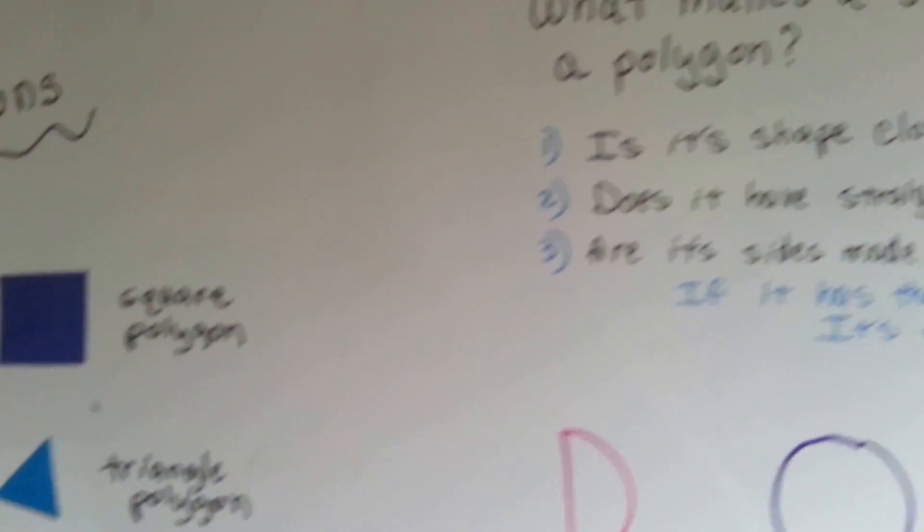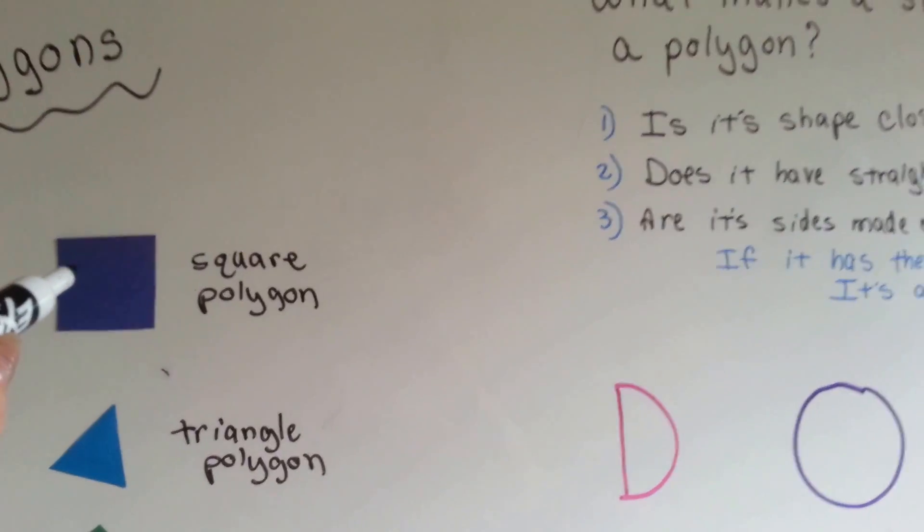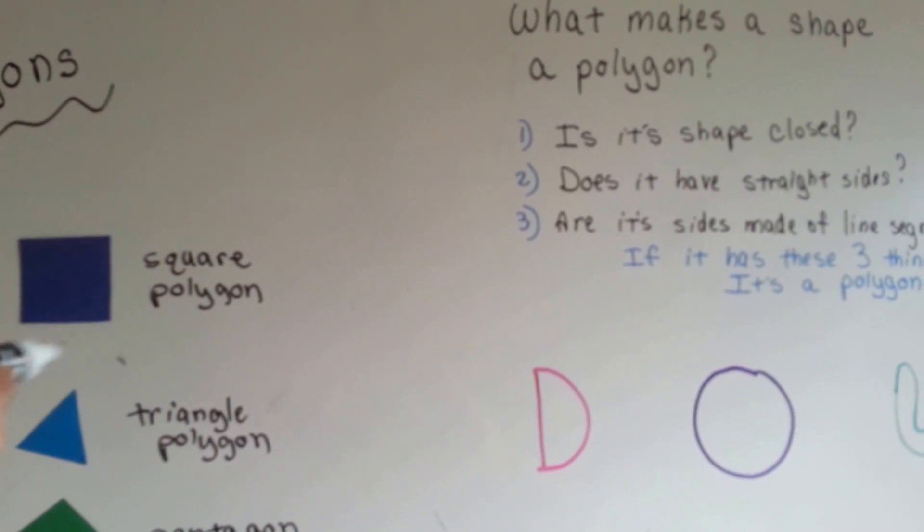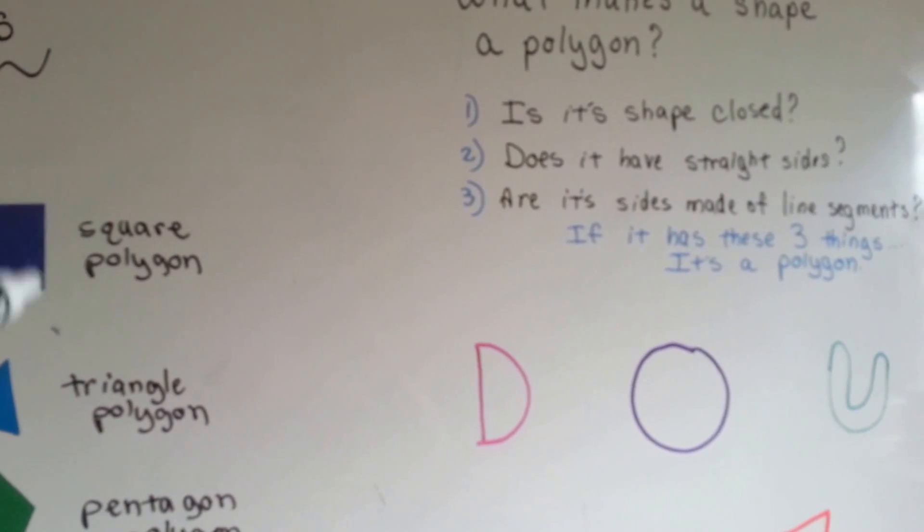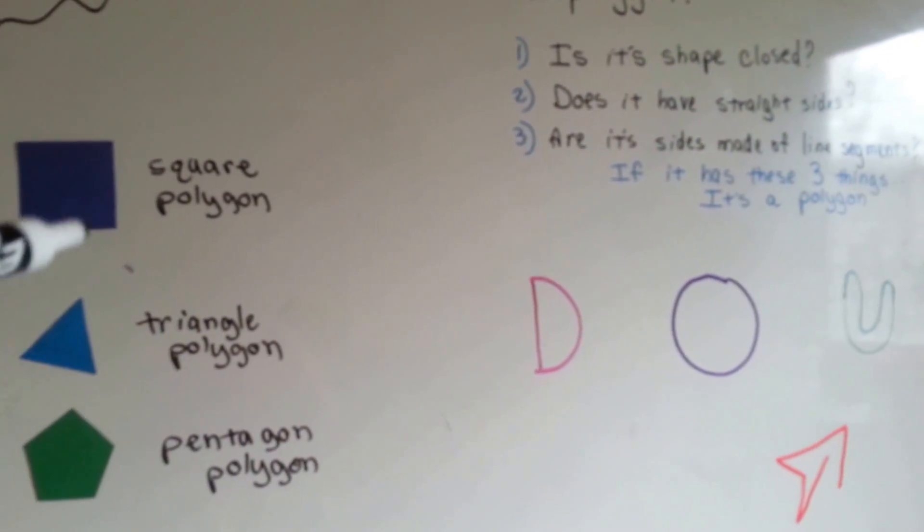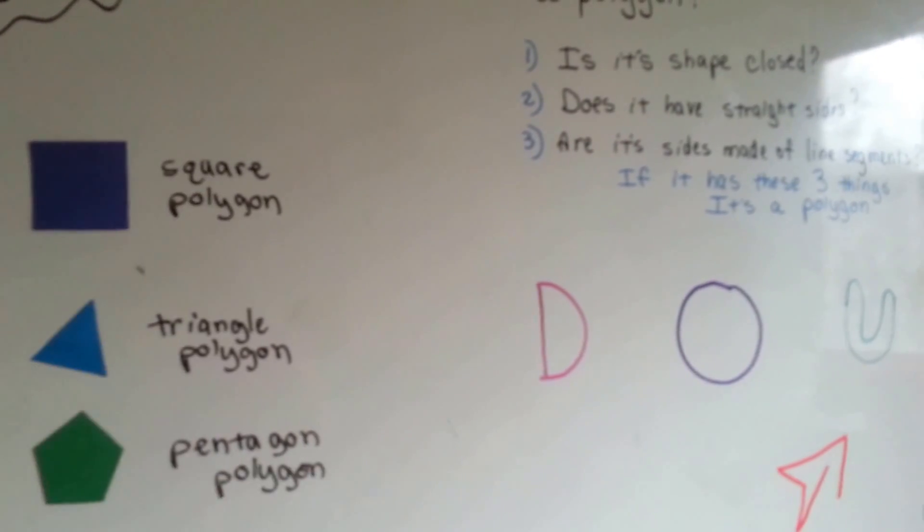So, let's check out some of these and see if they pass the test of three things. Here's a square polygon. Is its shape closed? Do you see any openings around the edges? It's closed. Does it have straight sides? Yes, it does. Are its sides made of line segments? Yes. Four. One, two, three, four. So yes, that is a square polygon.